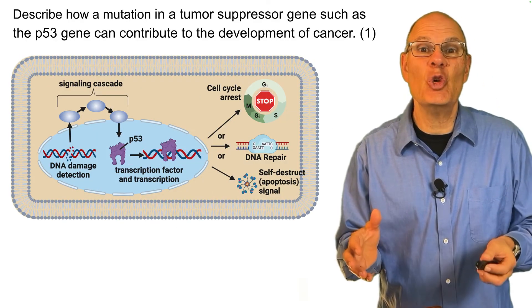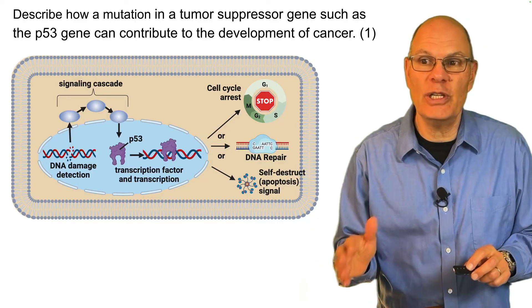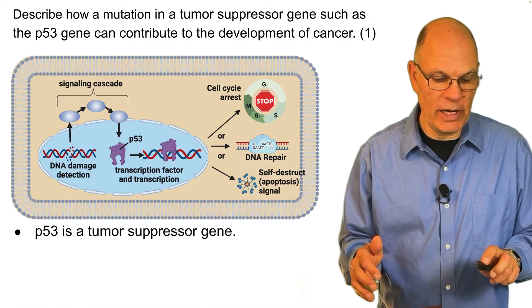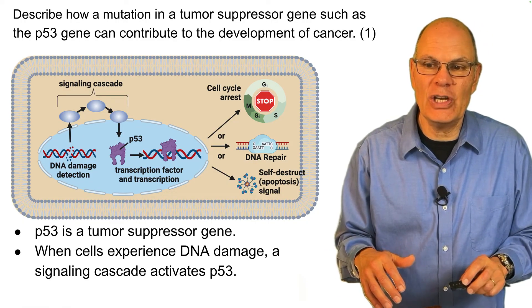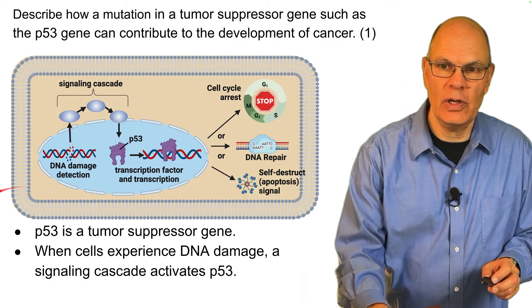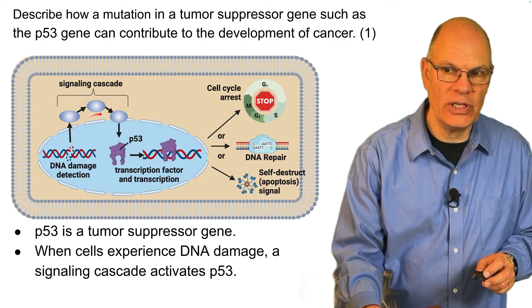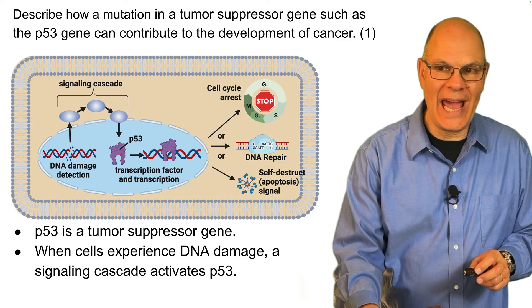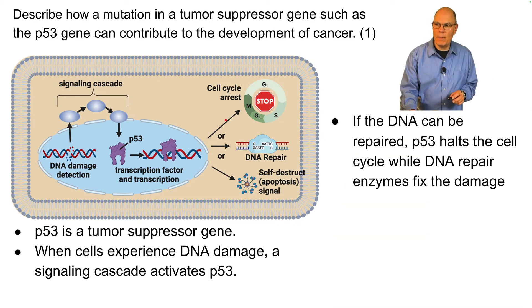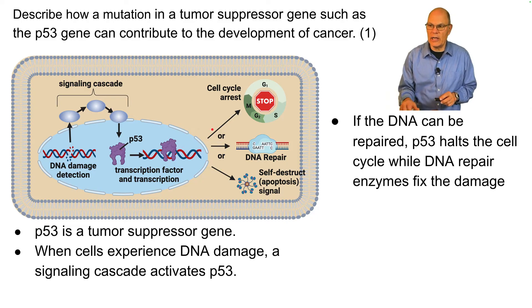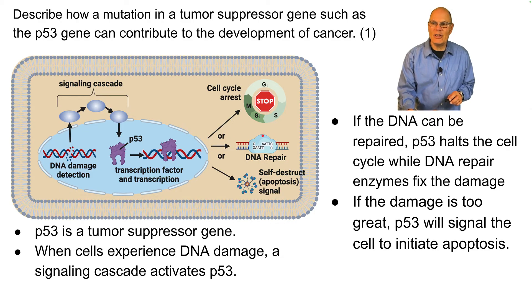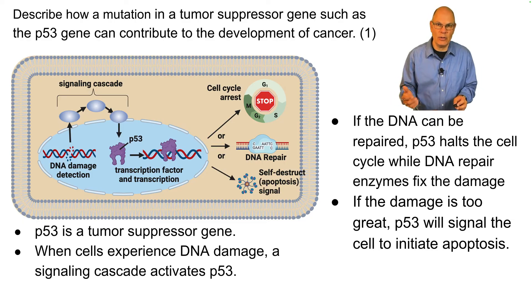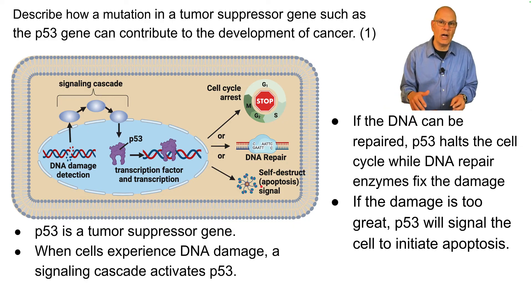p53 is a tumor suppressor gene. When cells experience DNA damage, a signaling cascade activates p53. If the damage can be repaired, p53 halts the cell cycle while DNA repair enzymes fix the damage. If the damage is too great, p53 initiates a signaling cascade that causes the cell to undergo apoptosis. So either we have repaired DNA while the cell cycle is halted, or the cell self-destructs — cancer has been prevented.